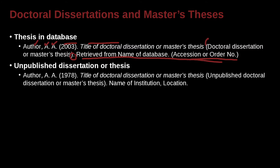Here's another example of an unpublished dissertation or thesis. We have the author, then the first name, middle name, the date. Here is the title of the dissertation or thesis, and here we actually say 'unpublished doctoral dissertation' or 'master thesis,' and then we have the name of the school and the location. So a little bit different, but basically the same.